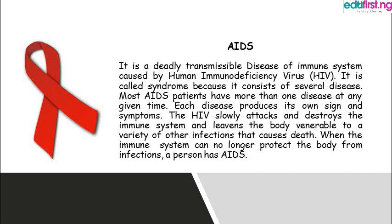You might be wondering what is the difference between HIV and AIDS. HIV slowly attacks and destroys the human immune system and leaves the body vulnerable to a variety of other infections that cause death. But when the immune system can no longer protect the body from infections, a person has AIDS, and such a person can be killed by the common cold or just fever. Therefore, a person cannot actually die of AIDS itself, but can be killed by a disease they are unable to fight off because of it.